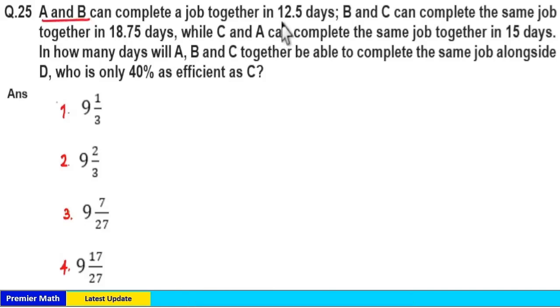A and B can complete a job together in 12.5 days; B and C can complete the same job together in 18.75 days, while C and A complete the same job together in 15 days. In how many days will A, B, C together be able to complete the same job alongside D, who is only 40 percentage as efficient as C?